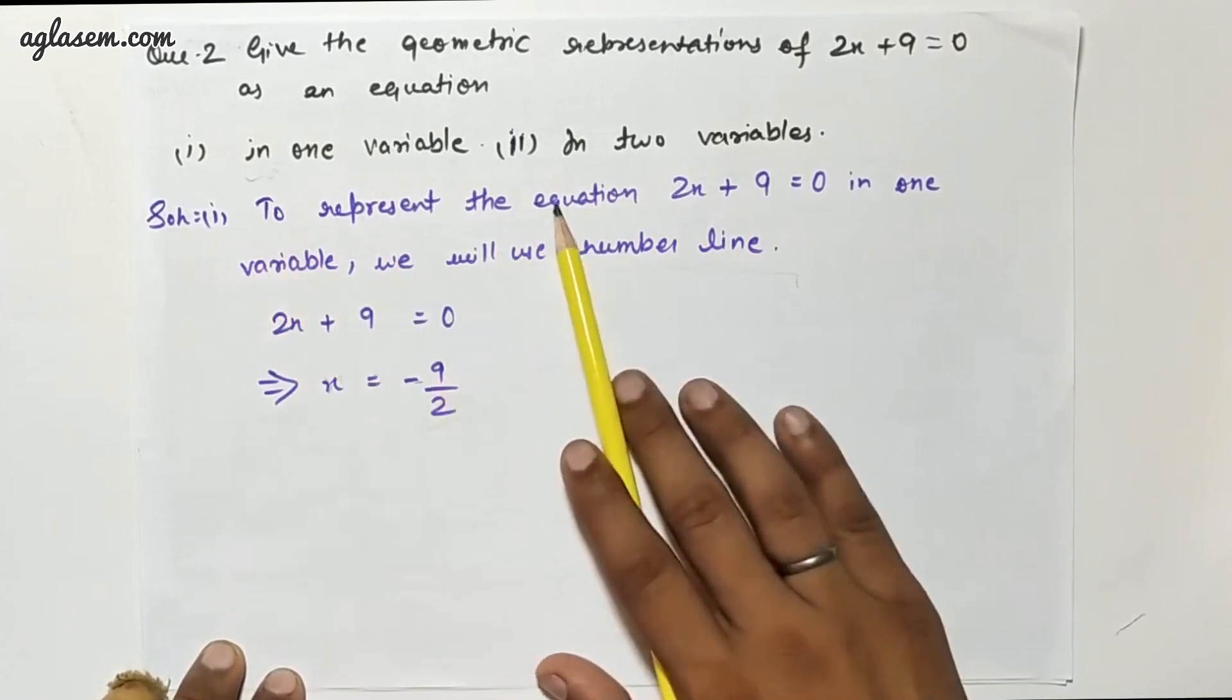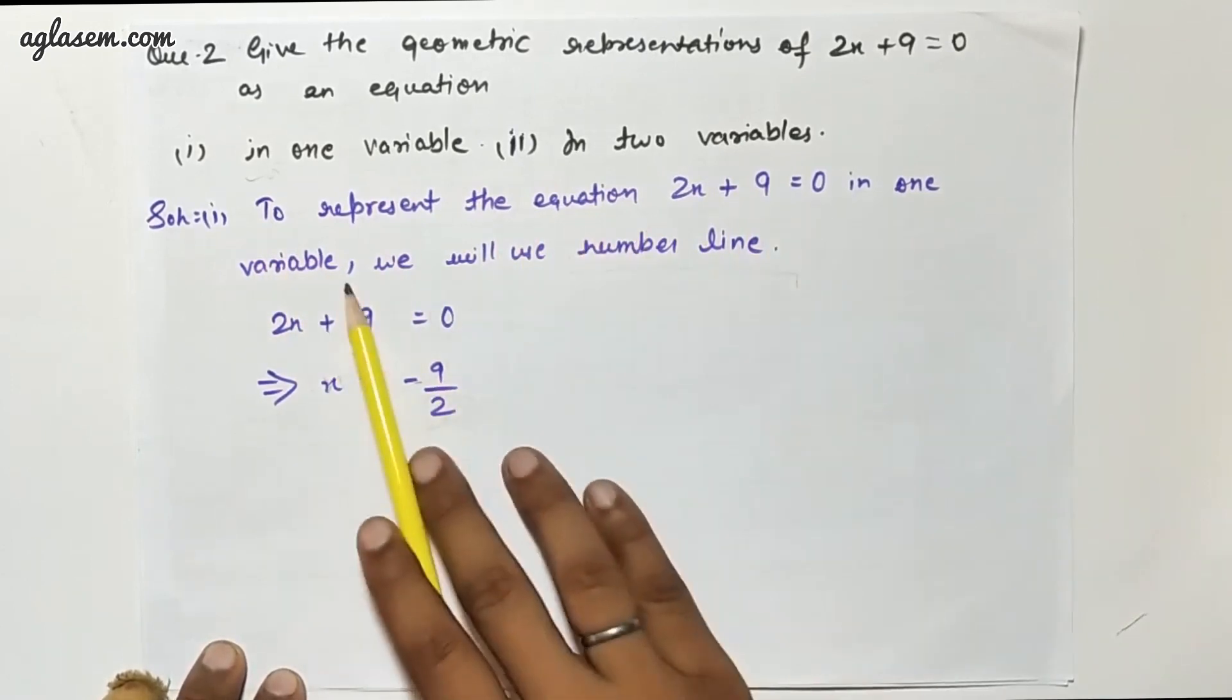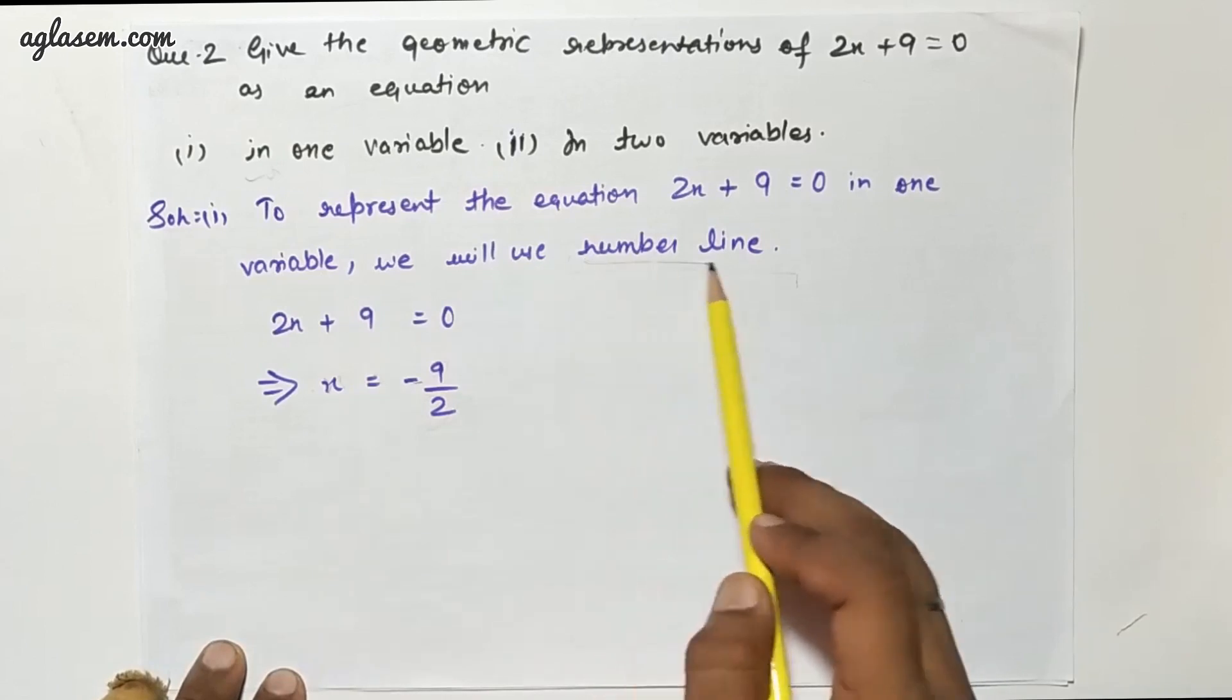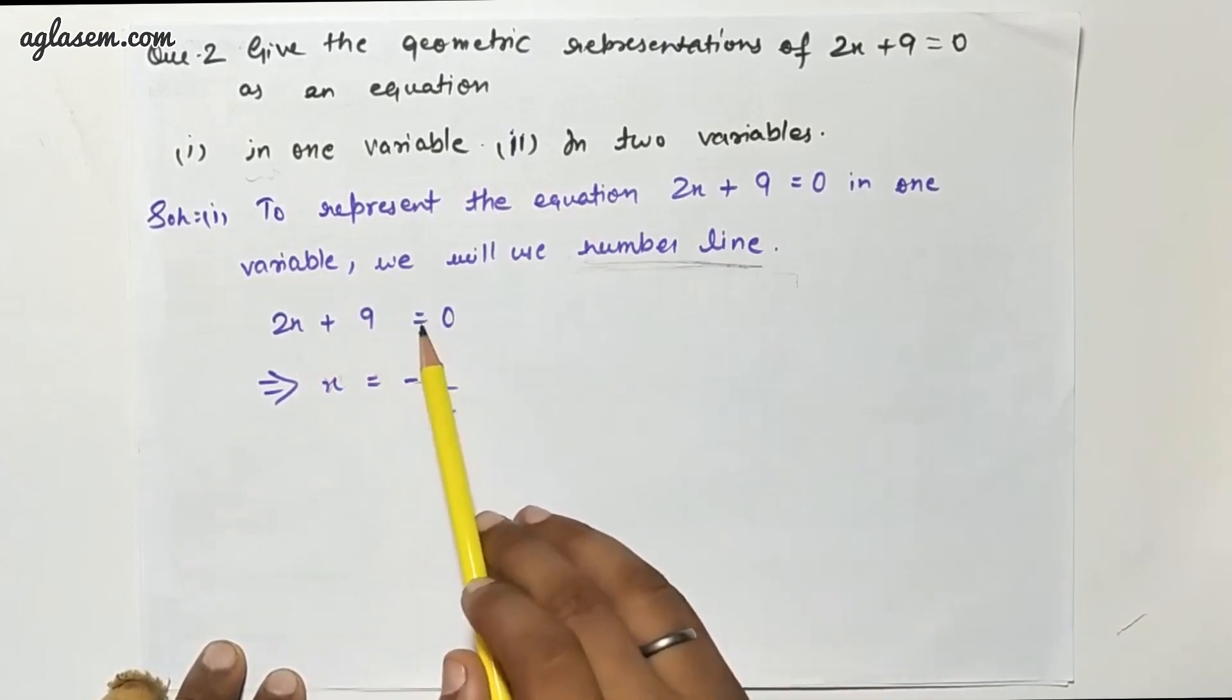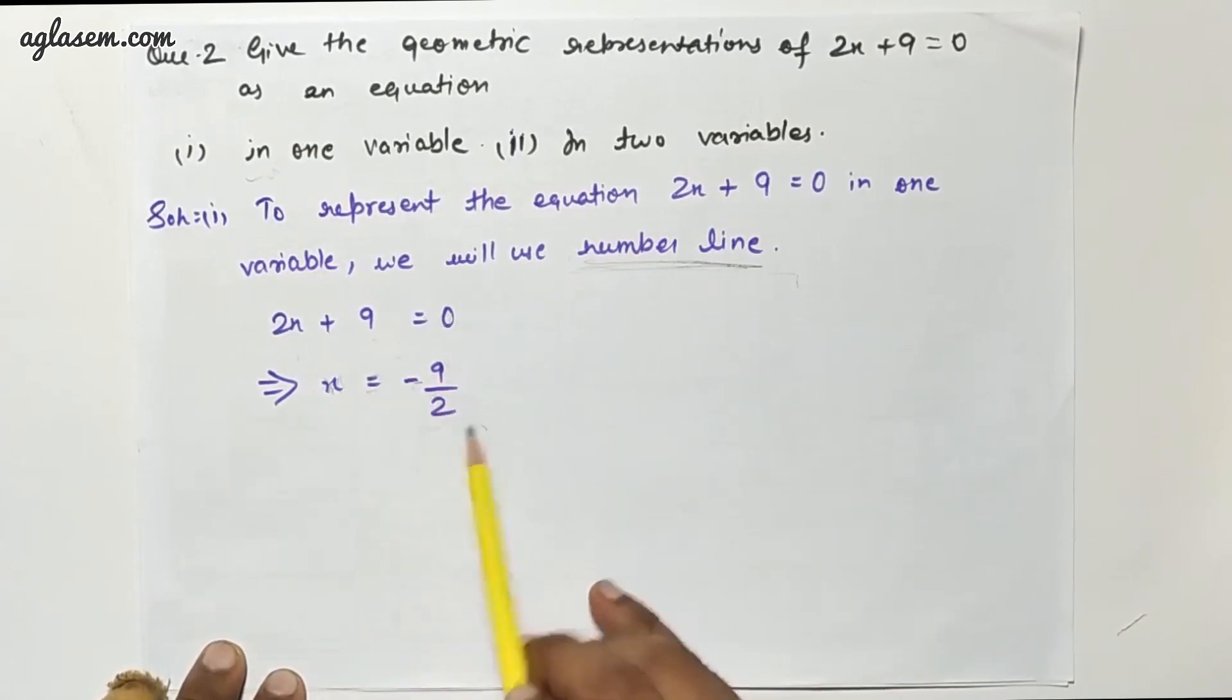First, to represent the equation 2x plus 9 equals 0 in one variable, we will use the number line. 2x plus 9 equals 0, so x equals minus 9 upon 2 when we shift this term.